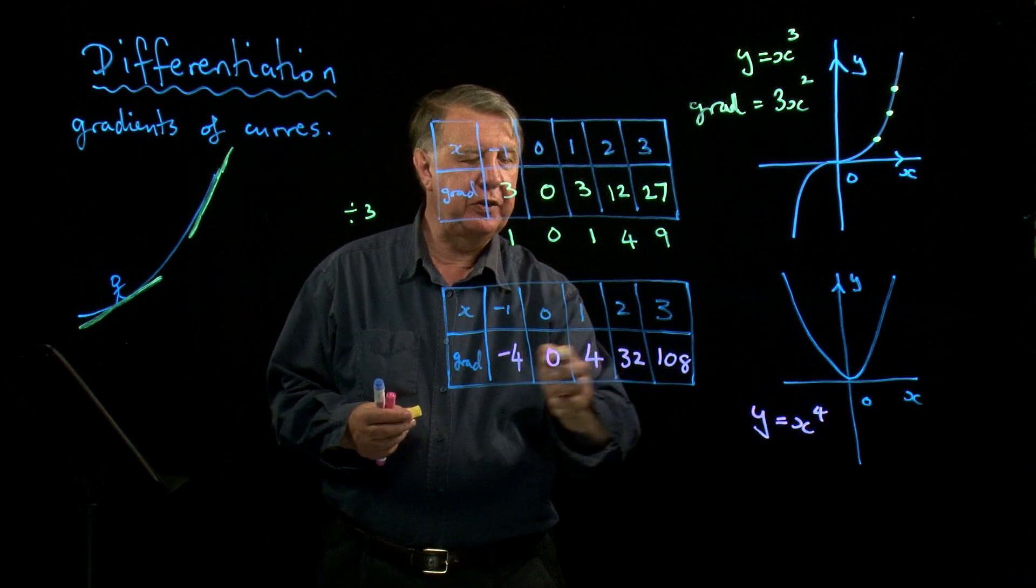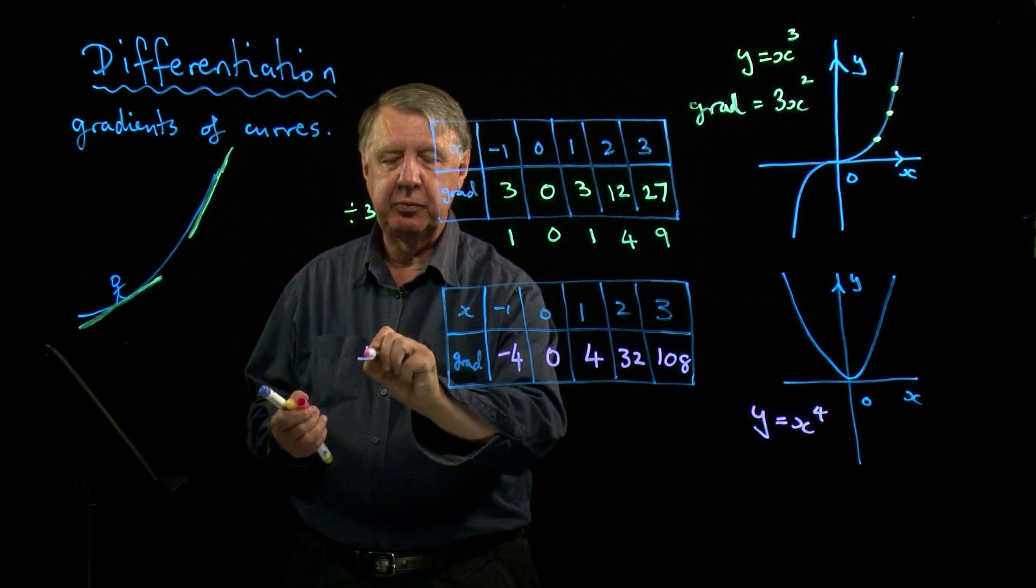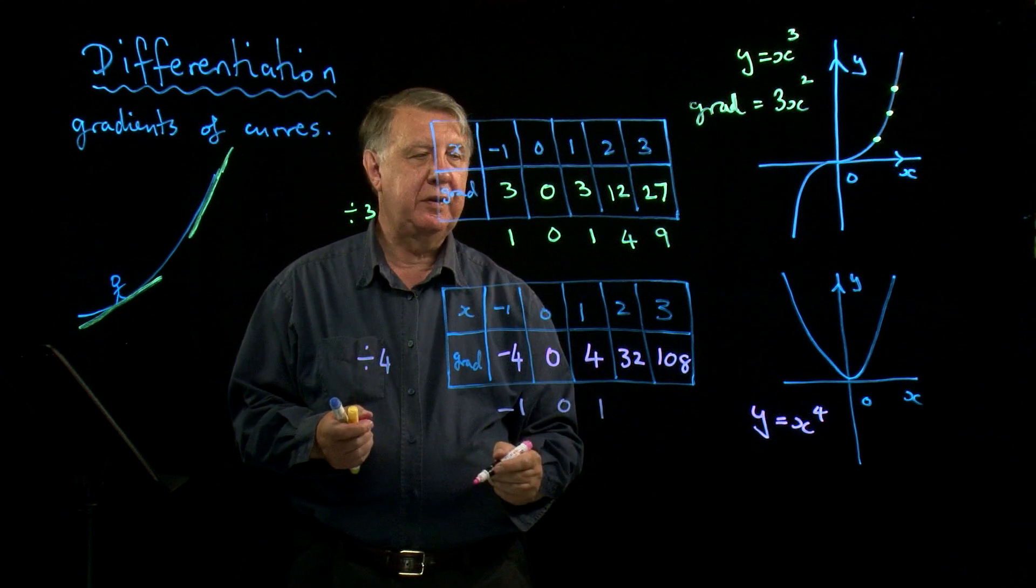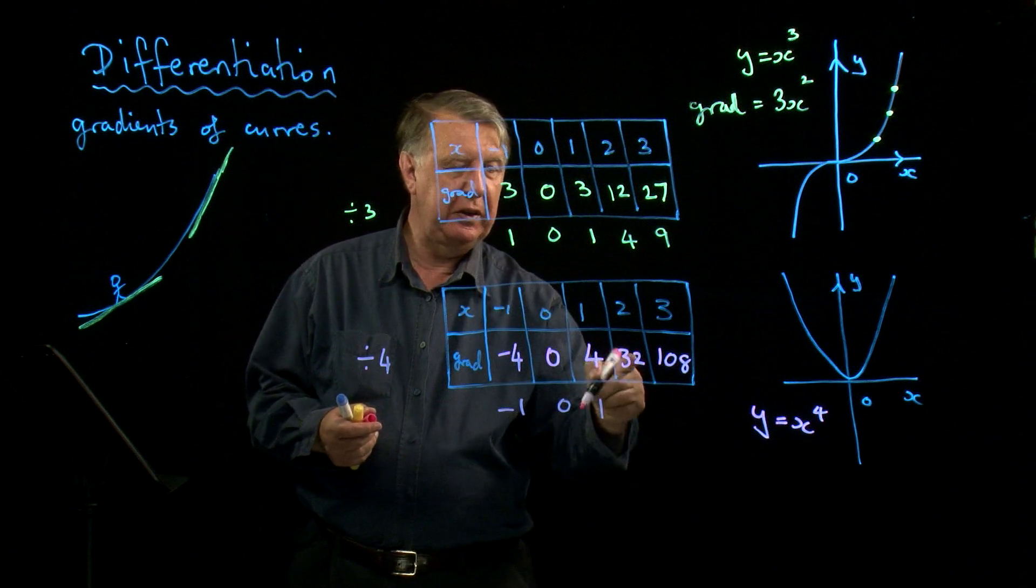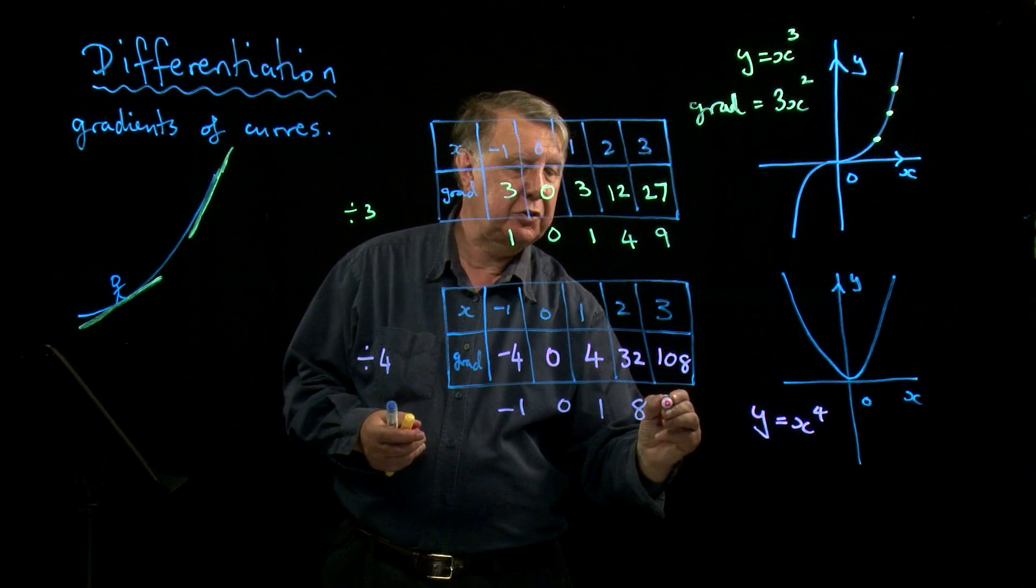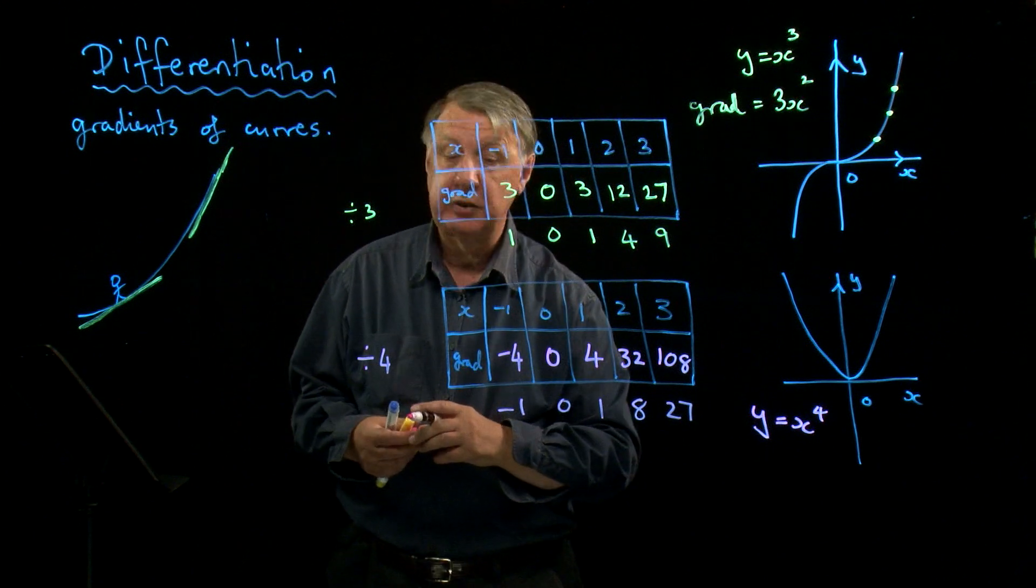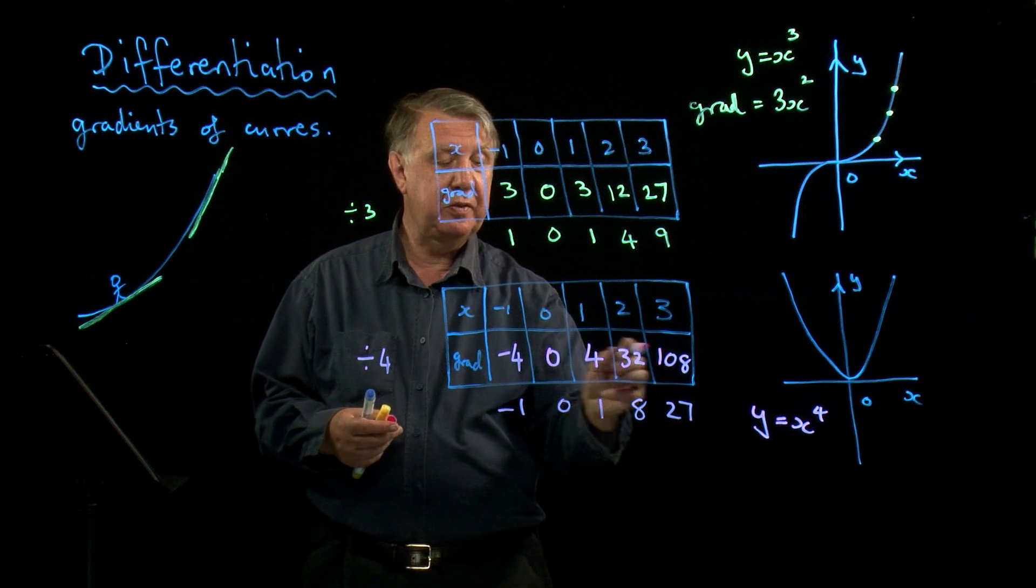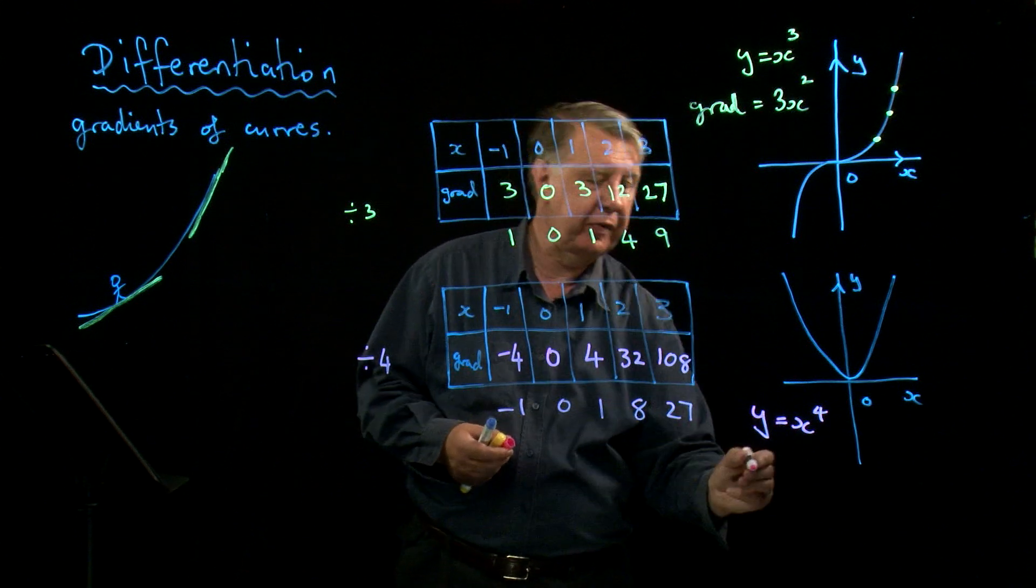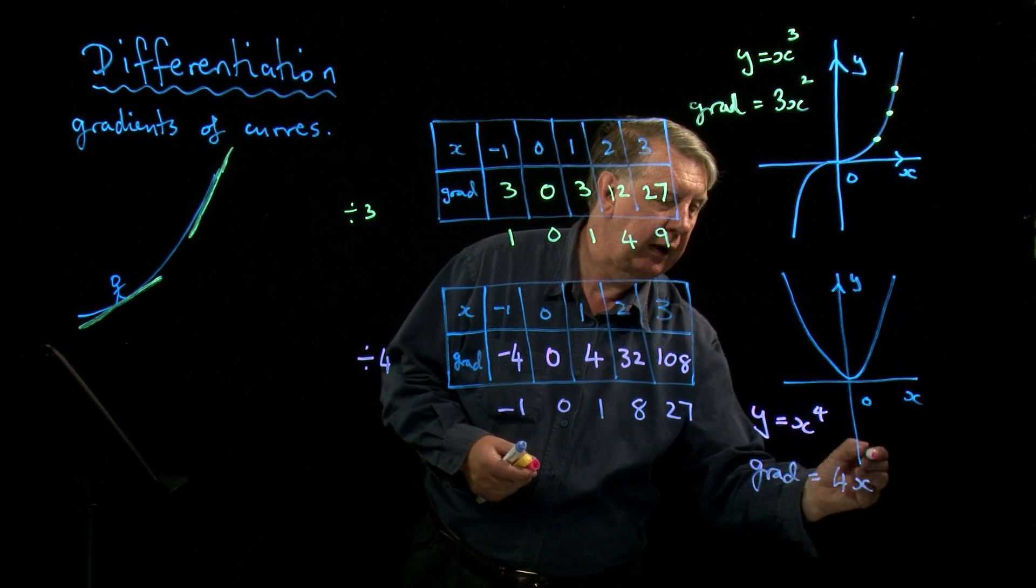Now let's look at these numbers. Again, not an obvious pattern there, is there? But they're all multiples of 4. So let's divide by 4. Negative 1, 0, 1. Nothing terribly obvious. I mean, they're pretty similar to that. But immediately I go to 8, and then 27. Then you can see what it is. They're all cube numbers. And they're cube numbers. These then are cube numbers multiplied by 4. So if y is x to the 4, the gradient is 4x to the power 3.